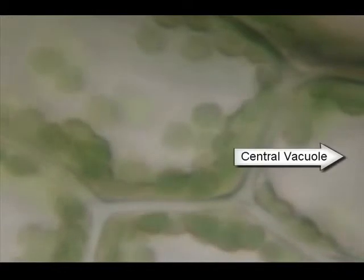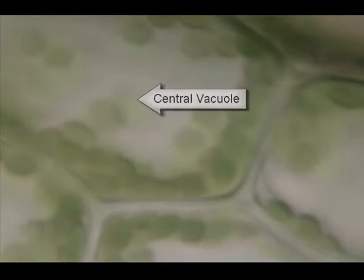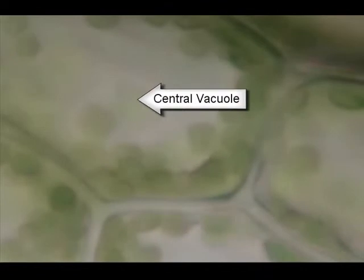Now imagine taking a balloon and inflating it inside of a box. If something were to move within the box, it would have to push its way between the box and the balloon. The chloroplasts are pushing their way past the vacuole and being held against the cell membrane and cell wall.